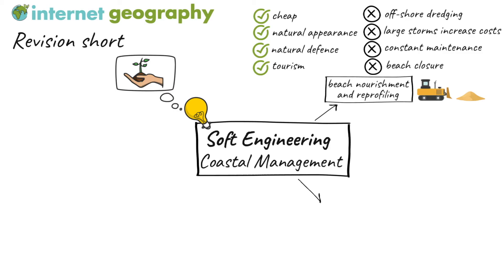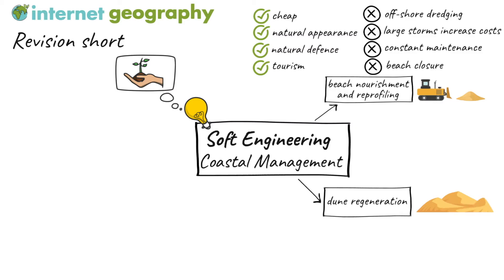Dune regeneration involves taking action to build up dunes and increase vegetation. This helps to strengthen the dunes and prevent coastal retreat. New sand dunes can be created to protect from coastal flooding. Often, marram grass is planted to hold the dunes together. Wooden boardwalks can be built to encourage people not to walk on the dunes. One advantage of dune regeneration is that it is very cheap compared to other approaches to coastal management. It's considered a natural barrier by many people, producing an attractive amenity for tourists.